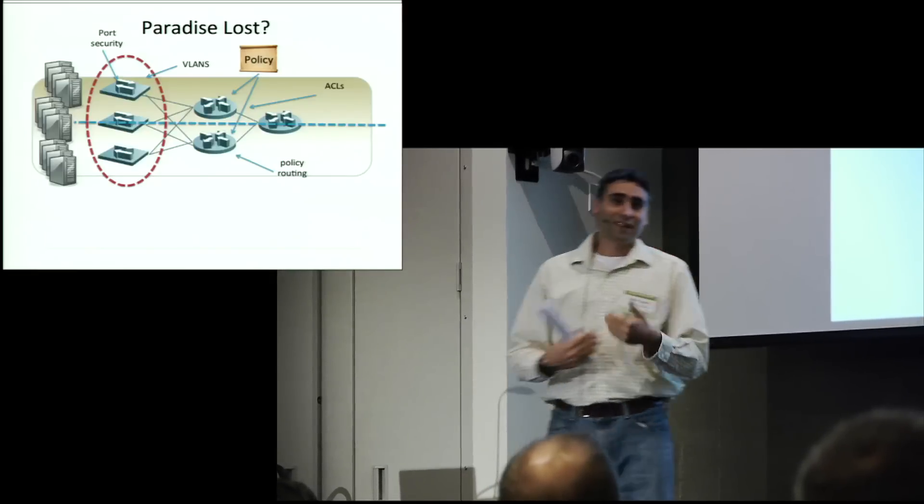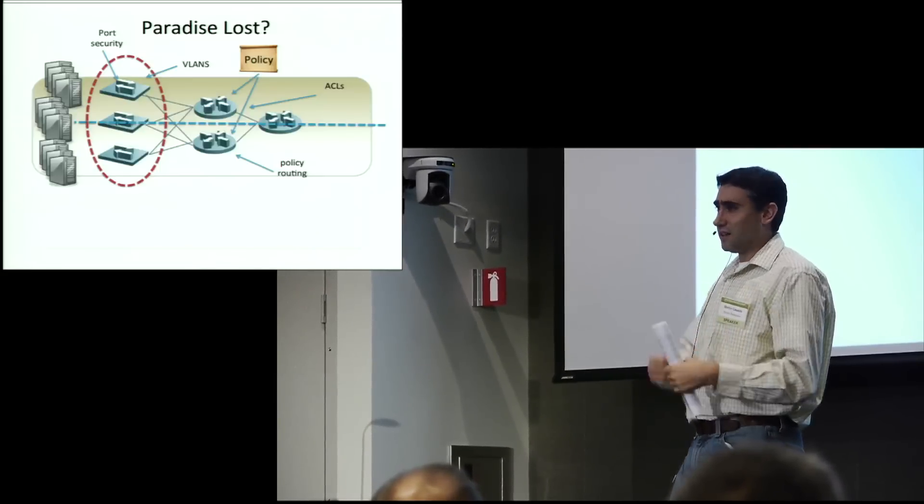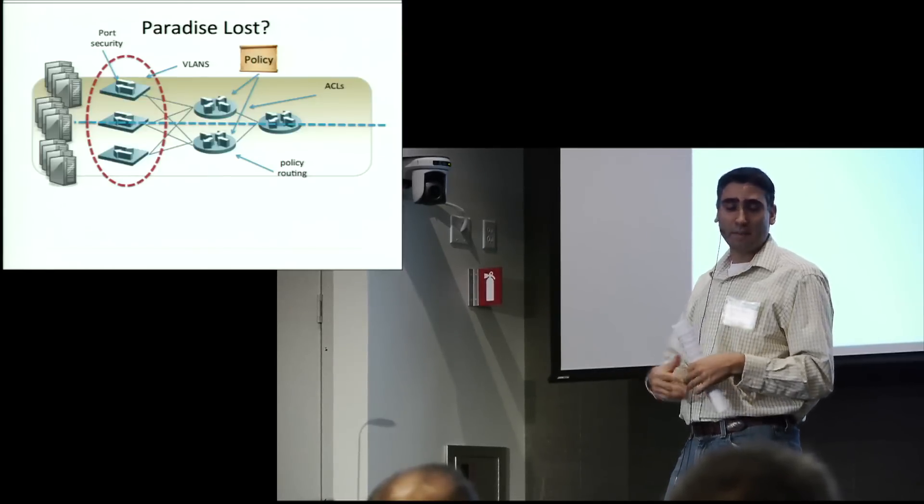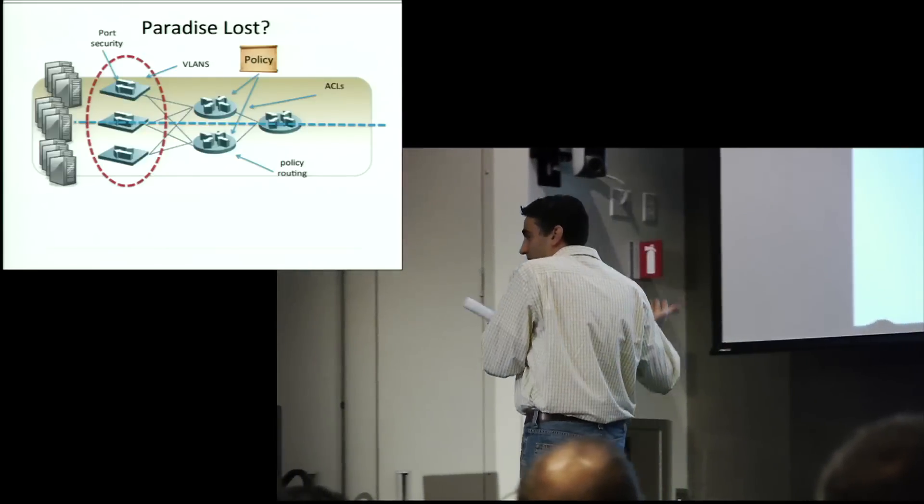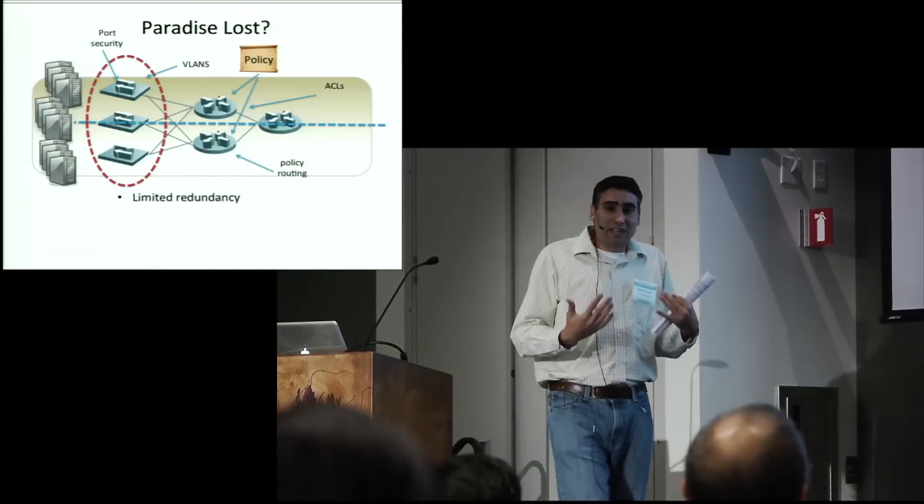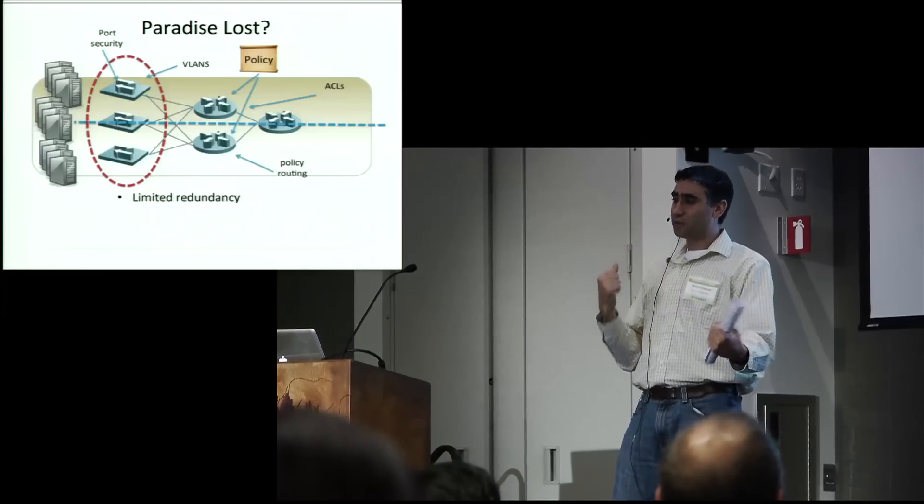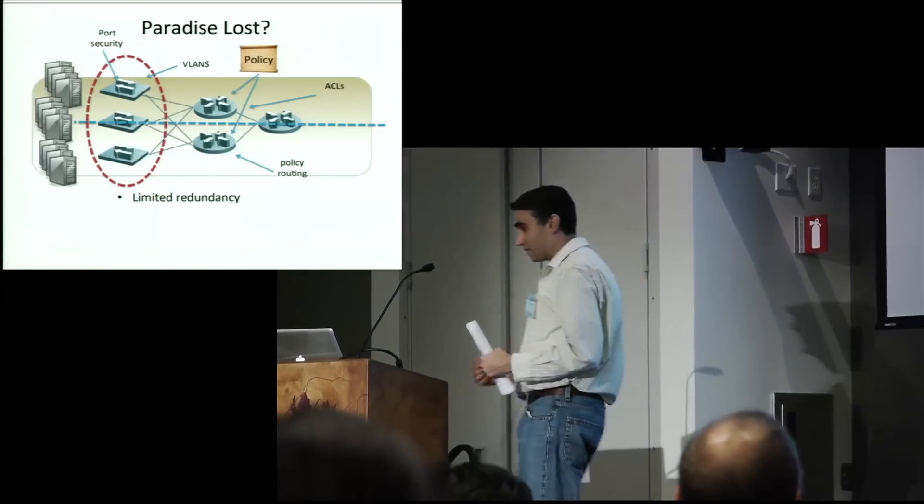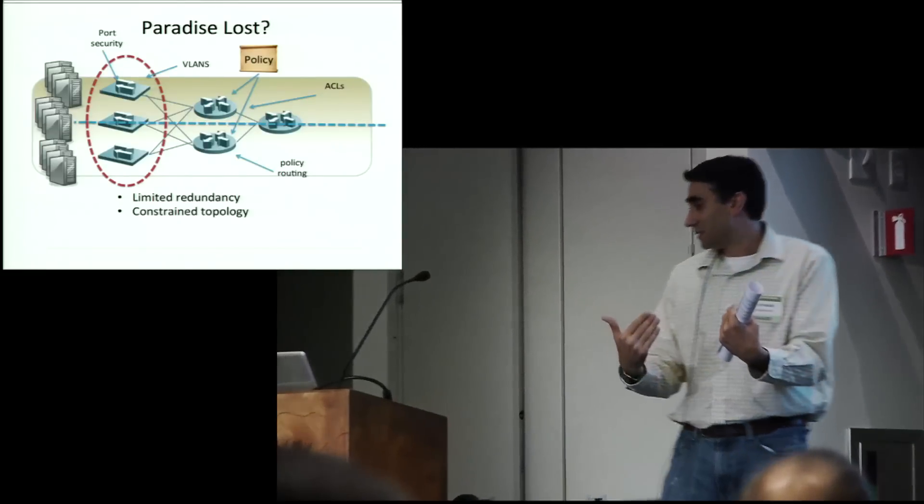So if you take an introductory networking book and you open it up, networks are touted as scalable and robust and they can handle change very easily. These are the networks we learn about. And we would end up creating something that was very different. For example, we would limit redundancy on purpose so that we would have choke points to ensure security policy because there's a trade-off between human error and availability.